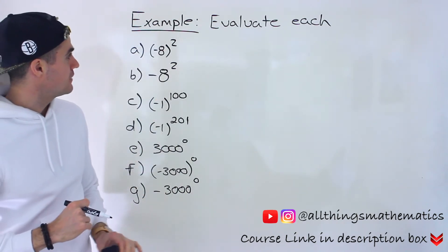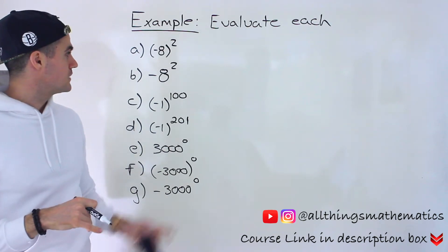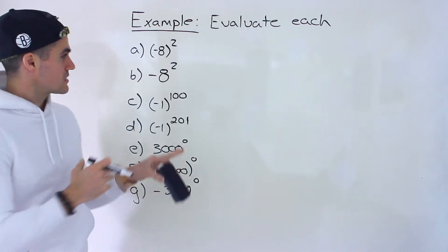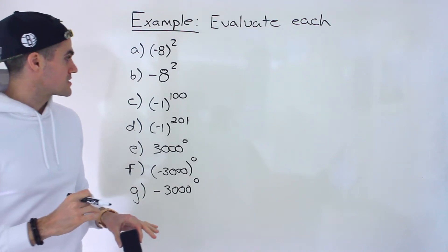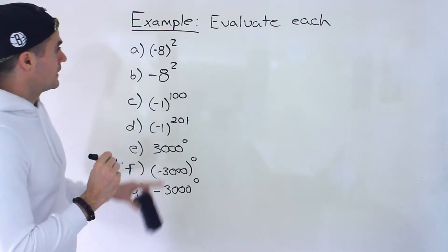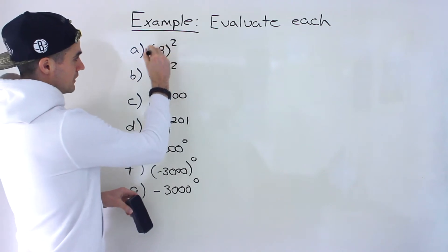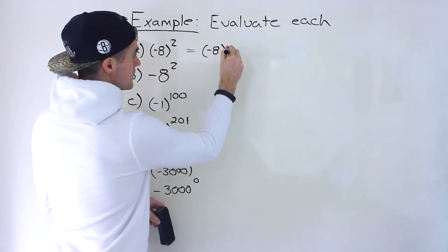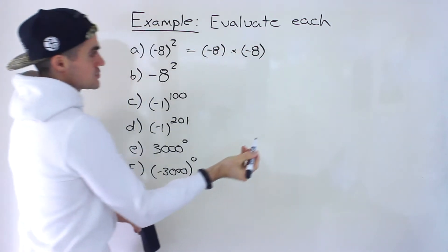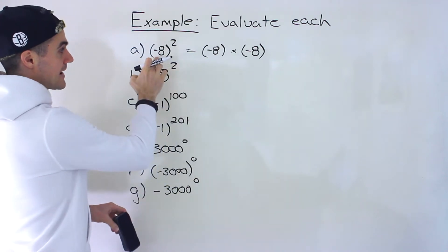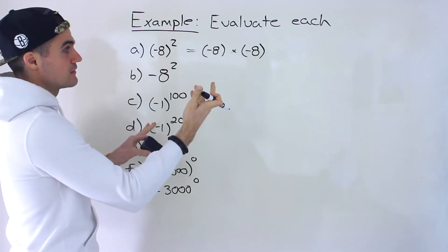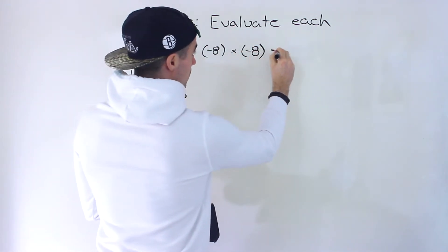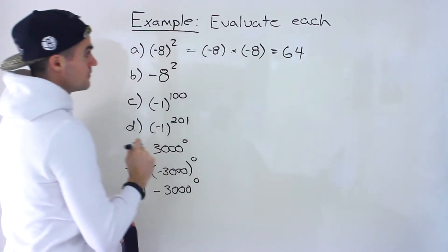Starting off with Part A, we have negative 8 in brackets to the power of 2. And in Part B, we have negative 8 as well, but it's not in brackets — that's also to the power of 2. This is a common scenario that comes up, so I wanted to go over it. For Part A, if we expand negative 8 in brackets to the power of 2, it's just negative 8 multiplied by negative 8 — multiplied by itself twice.